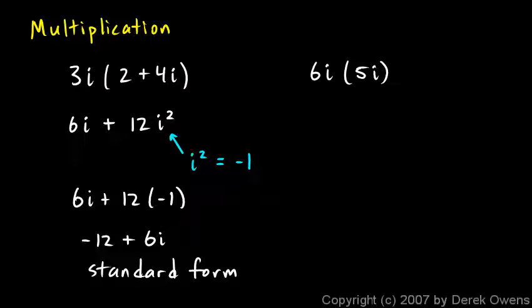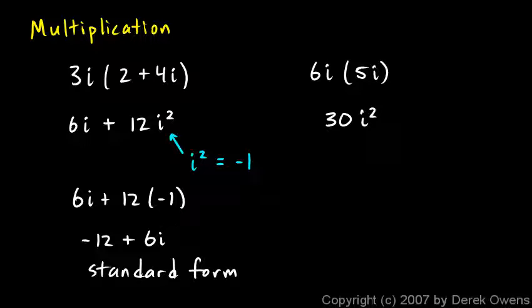Now let's look at the example on the right: 6i times 5i. Both are pure imaginary numbers with no real part. When I multiply, I get 30i squared, and since i squared is negative 1, this is just 30 times negative 1, which is negative 30. The result is a real number with no imaginary part, and that's perfectly fine.